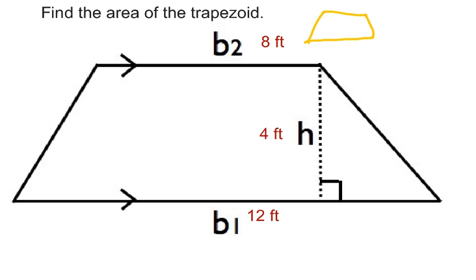So if I draw two trapezoids together, I would get a parallelogram. We know that the area for a parallelogram is the base times the height.